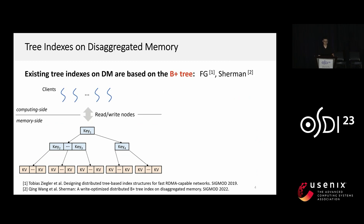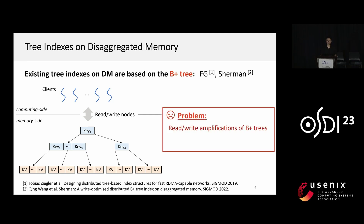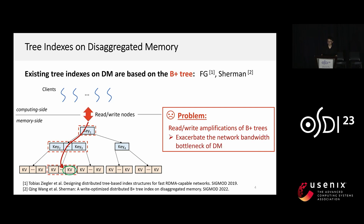Existing chain indexes on DM are based on B+ trees. However, the B+ tree can bring severe read and write amplification issues on DM. When the client reads or writes a key-value item in a B+ tree, it needs to search the tree by traversing many internal nodes, which contain many useless keys and pointers. Besides, the client needs to read or write the entire leaf node, which stores multiple key-value items together. This amplifies network bandwidth consumption and exacerbates the network bandwidth bottleneck of the DM architecture.